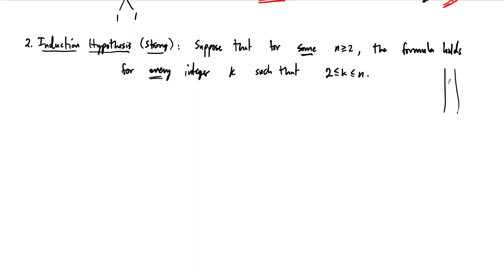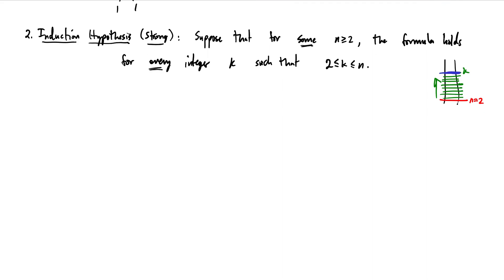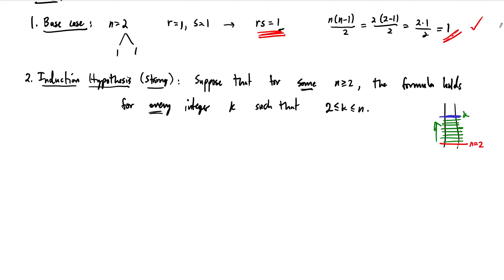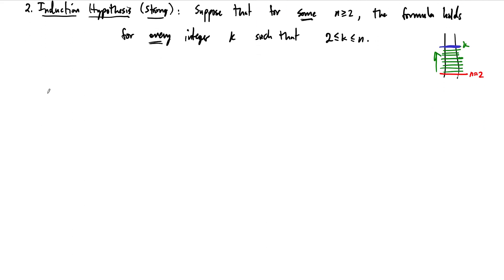Using the ladder analogy, our base case was n equal to 2. What we're assuming is that if we are on the kth step, we have stepped on every step of the ladder on the way up — that's the strong induction hypothesis. The weak hypothesis is you just jump on the ladder at the kth step and don't care how you got there. For the strong hypothesis, we've stepped on every step.